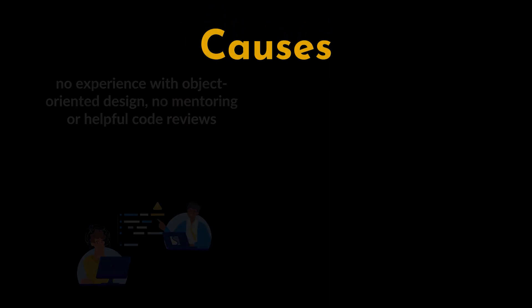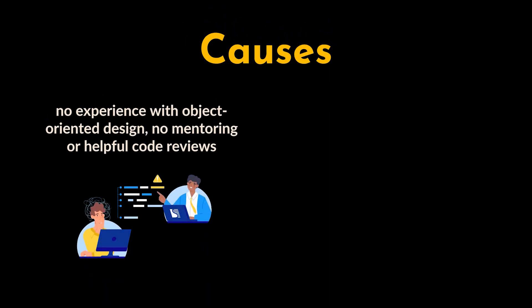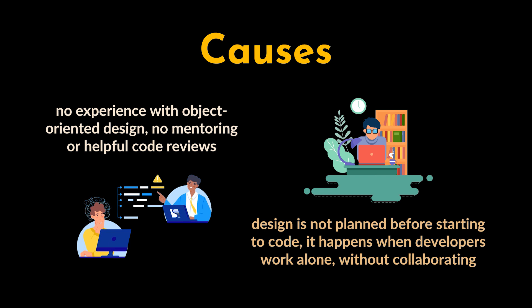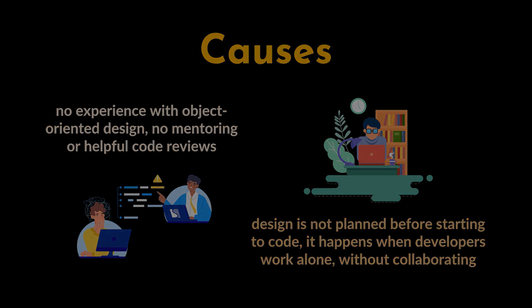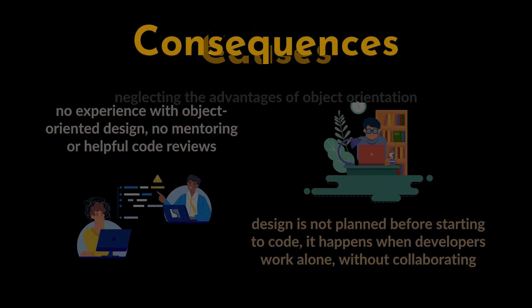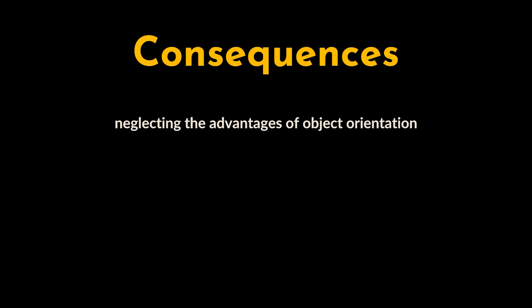Spaghetti code is often caused by not having much experience with object-oriented design. This gets worse when there's no mentoring or helpful code reviews. Another issue is not planning the design before starting the code. It happens a lot when developers work alone without collaborating.